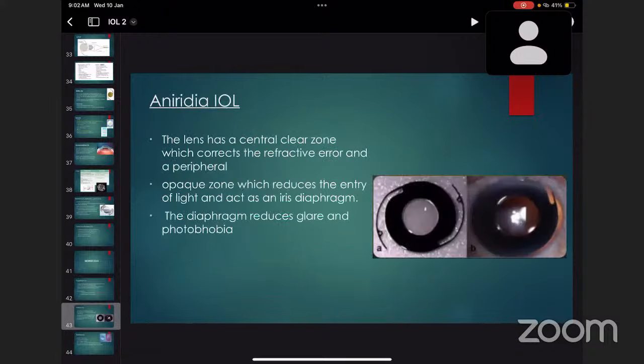Second comes aniridia IOLs. The lens has a central clear zone which corrects the refractive error and peripheral opaque zone which reduces entry of light and acts as iris diaphragm. This diaphragm reduces glare and photophobia.